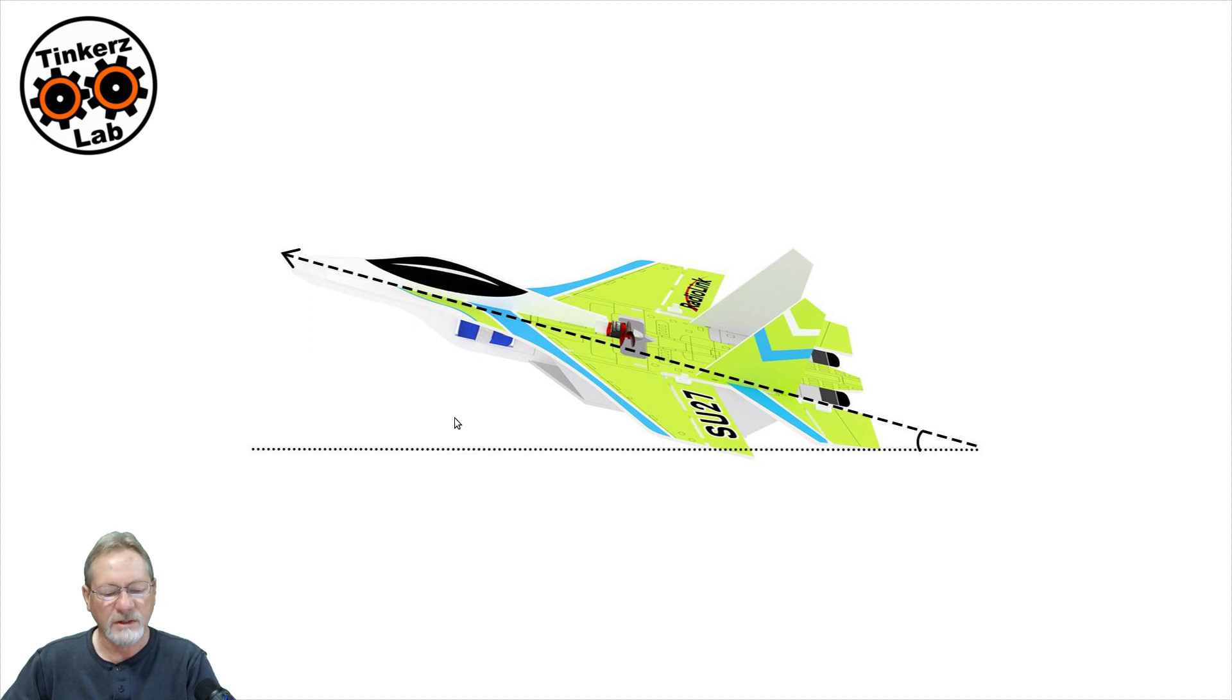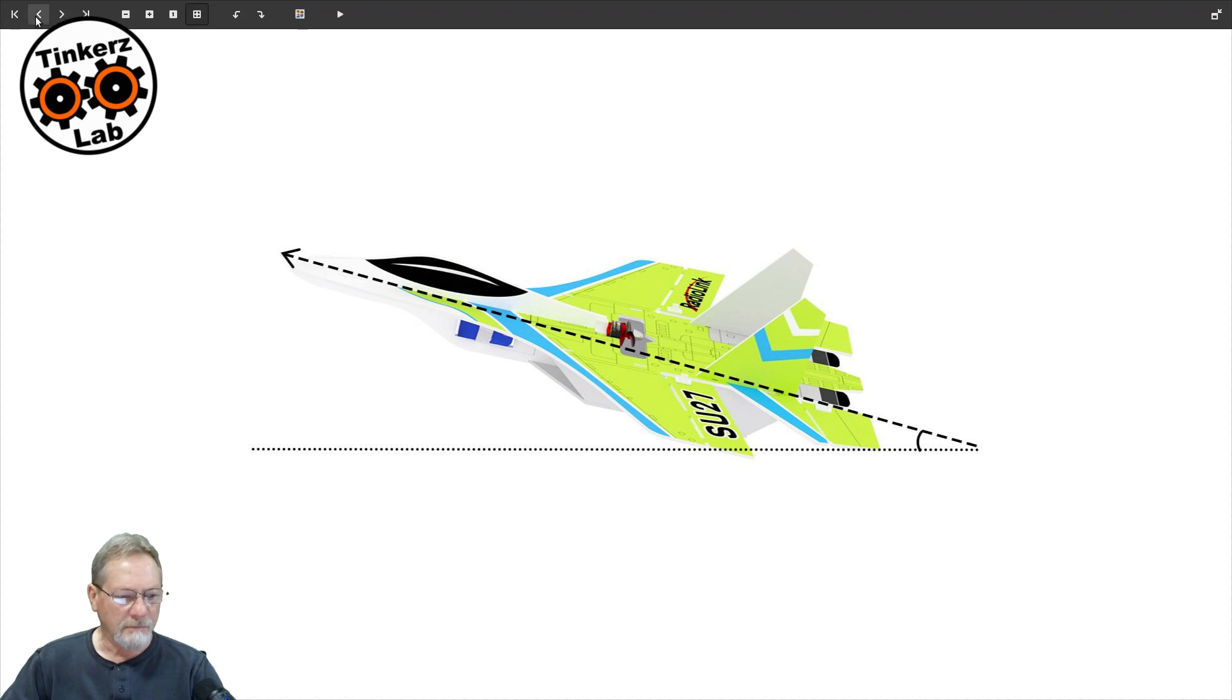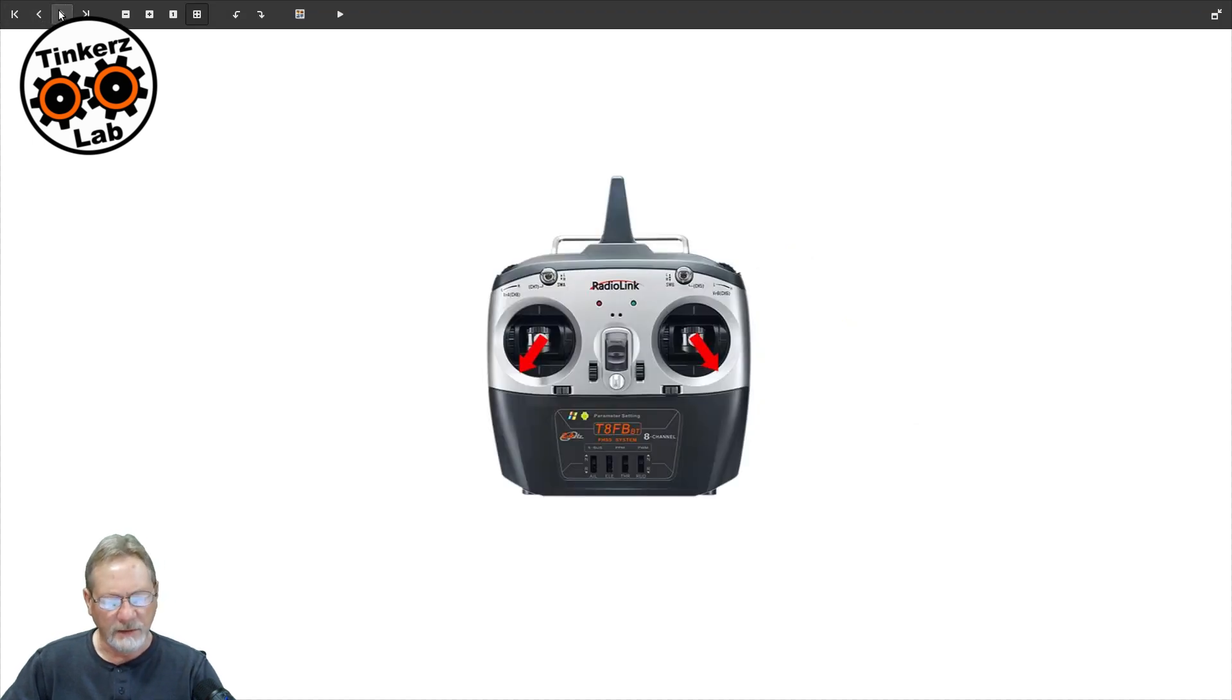I always just set my aircraft flat and level when the gyro initializes so that when I launch it and fly it around, it's not flying in a nose-up attitude. But try it out both ways and see how you like that.